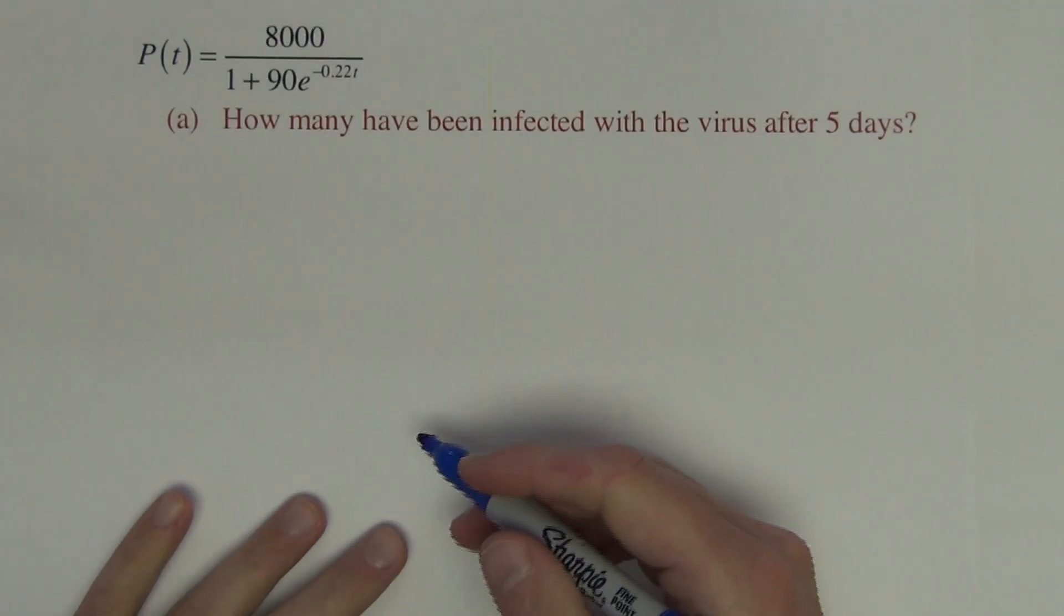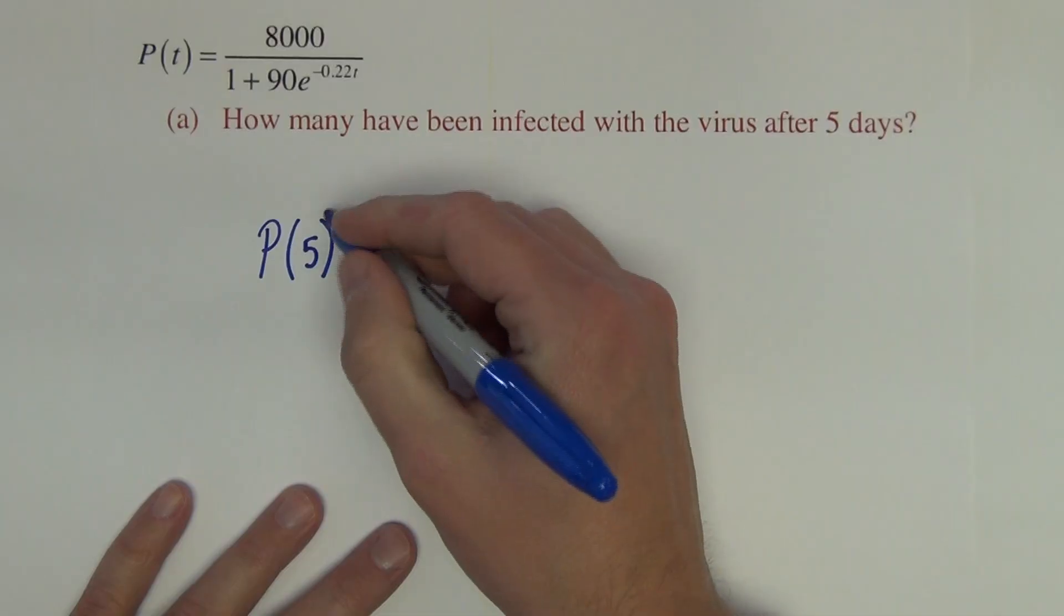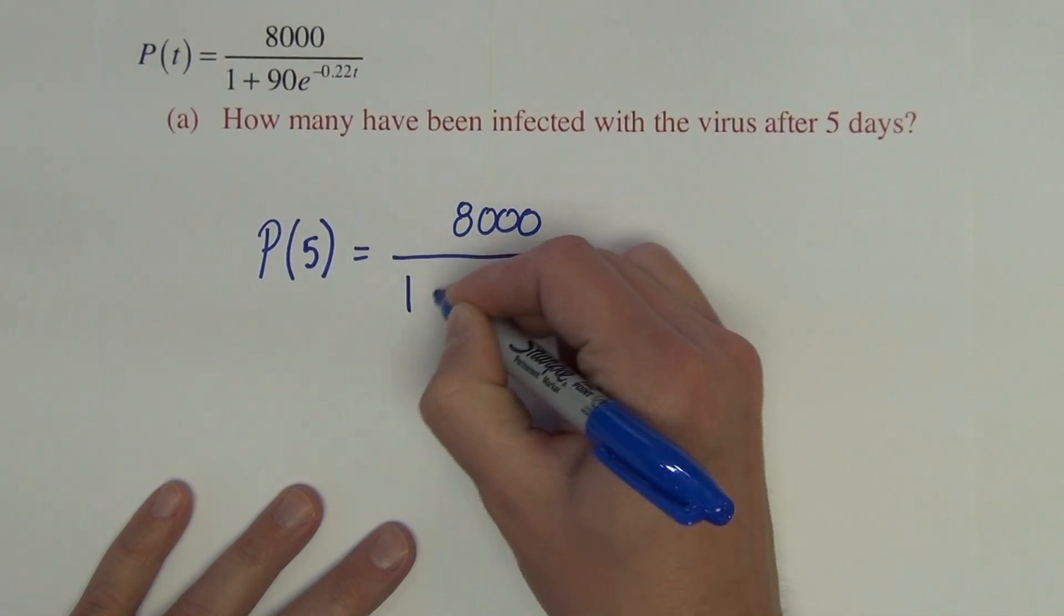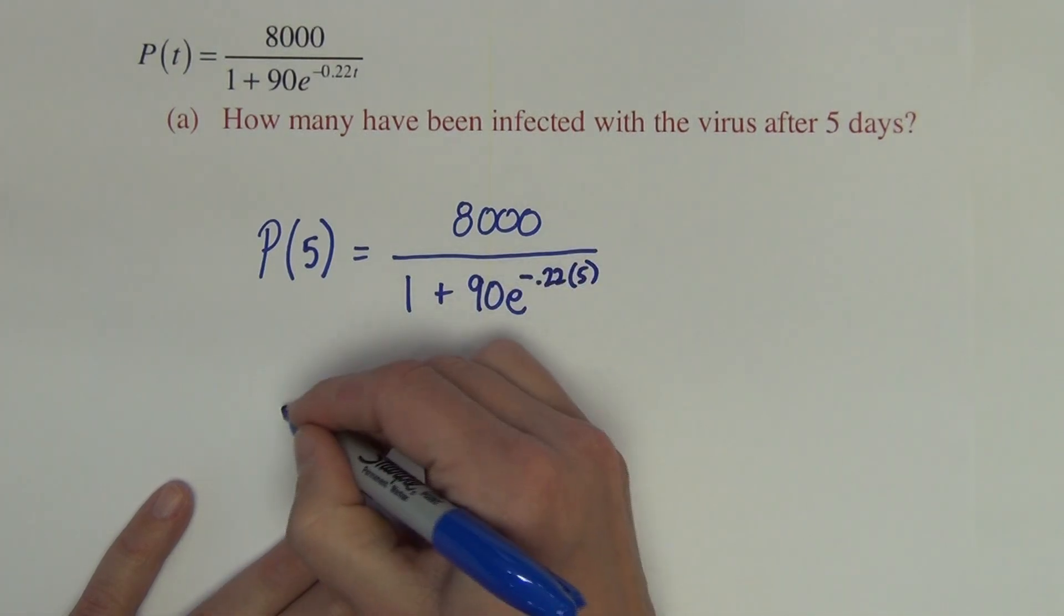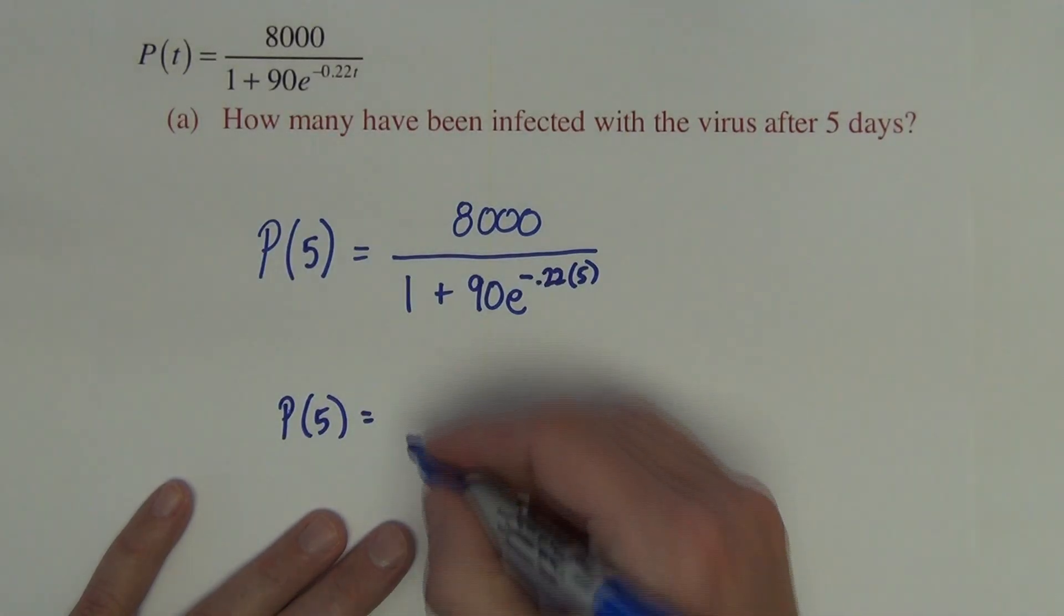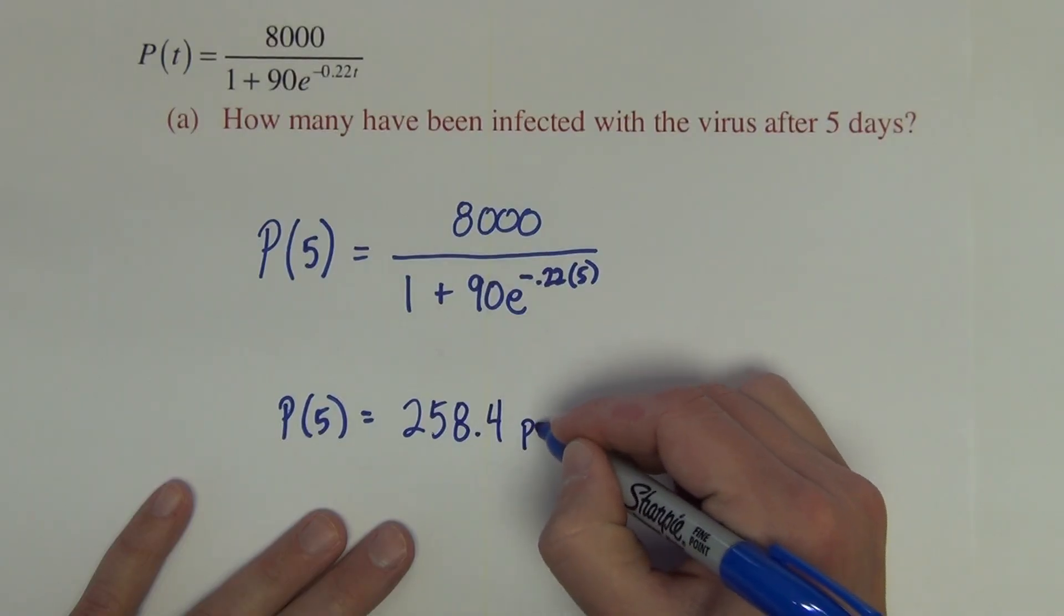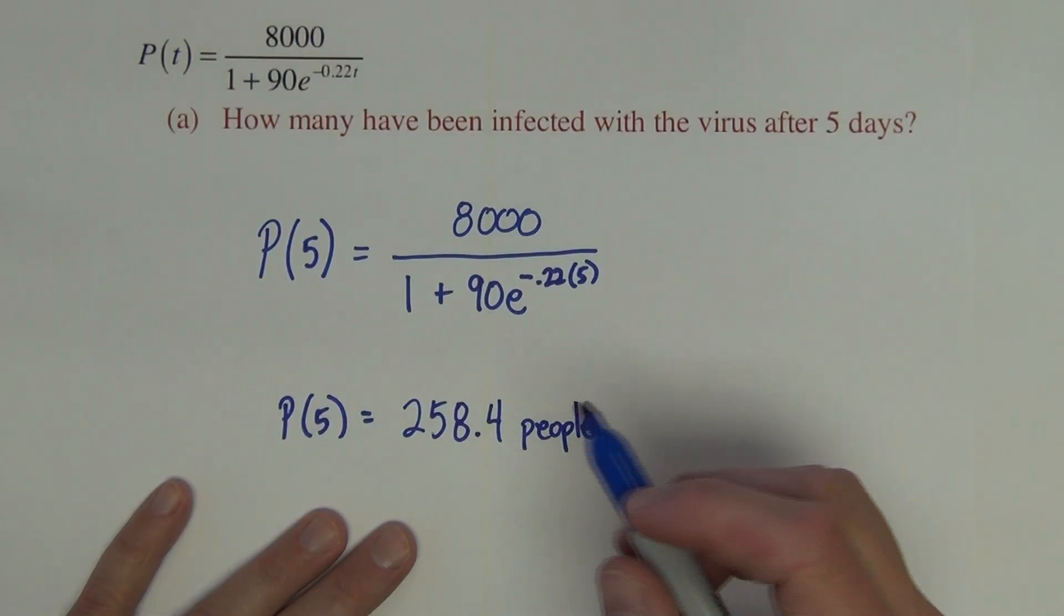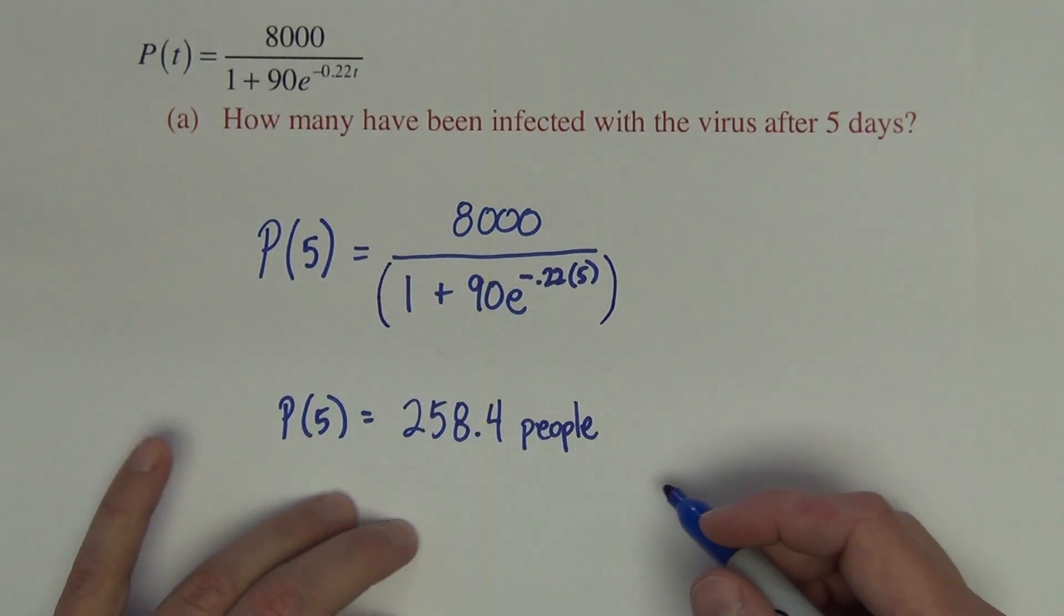Question A. How many have been infected with the virus after 5 days? So you want to know the population of infected people after 5 days. So we are simply replacing the t with 5. That is 8,000 over 1 plus 90e to the negative .22 times 5. So this is all calculator work from here. I am going to type this in. I have 258.4 people. So probably 259 people. You can't have .4 people. I did make sure when you do this, I did make sure to put parentheses right here on my calculator so order of operations was followed correctly.